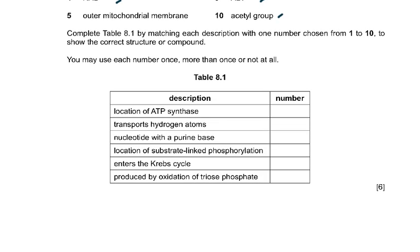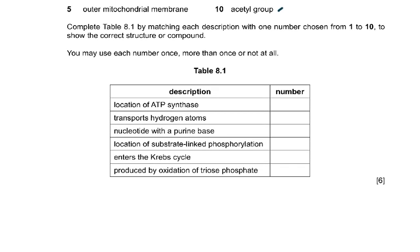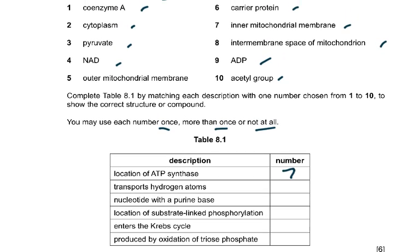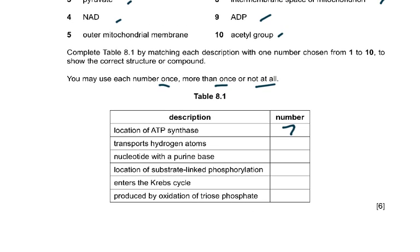Complete table 8.1 by matching each description with one number chosen from 1 to 10 to show the correct structure or compound. You may use each number once, more than once, or not at all. Location of ATP synthase was 7 — what is 7? Number 7 was the inner mitochondrial membrane.